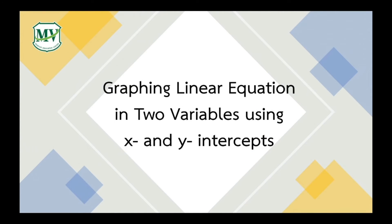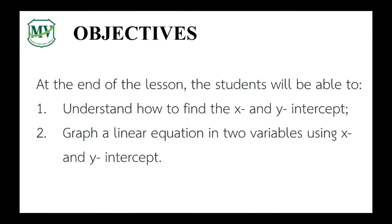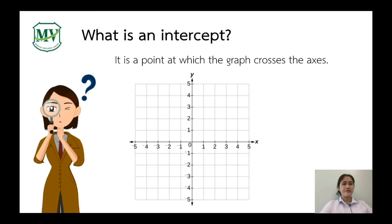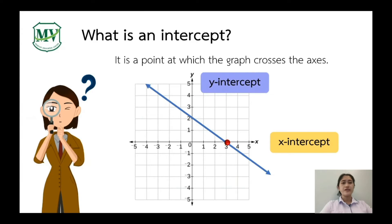Our lesson for today is about graphing linear equations in two variables using x and y intercepts. At the end of the lesson, you should be able to understand how to find the x and y intercepts and graph a linear equation in two variables using x and y intercepts. An intercept is a point at which the graph crosses the axis — either the x-axis or the y-axis. Therefore, there are two different intercepts: the x-intercept and the y-intercept.